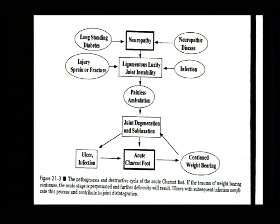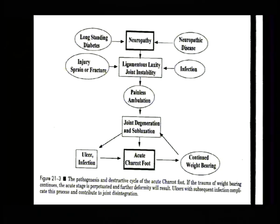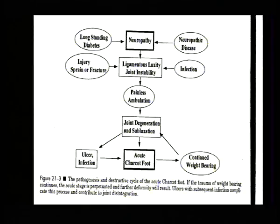If there is ulceration and infection, you have to treat it as such. But many times it is only acute Charcot — a leg which is swollen and warm, where the temperature difference between the affected leg and the contralateral leg is more than two degrees. That is a pathognomonic sign that it is Charcot.